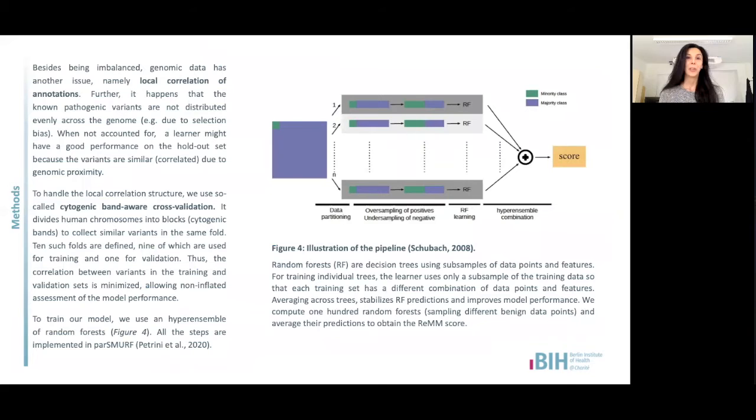The genomic data has another pitfall, namely the fact that the pathogenic variants known to us are not distributed evenly across the genome. The reason for that is that we used to analyze certain parts of the genome preferentially. So we do not necessarily analyze the entire genome with equal attention and interest for many reasons.